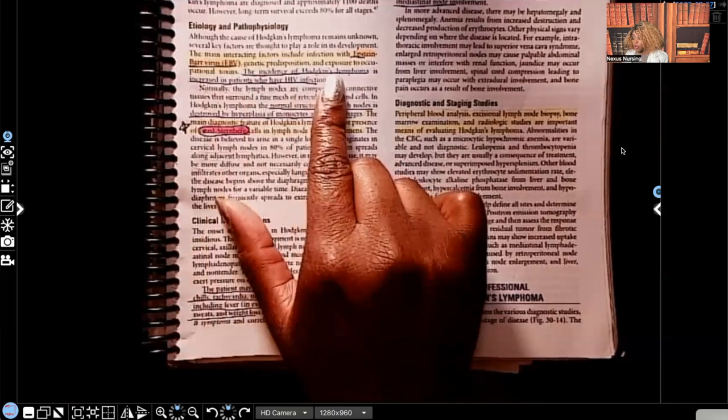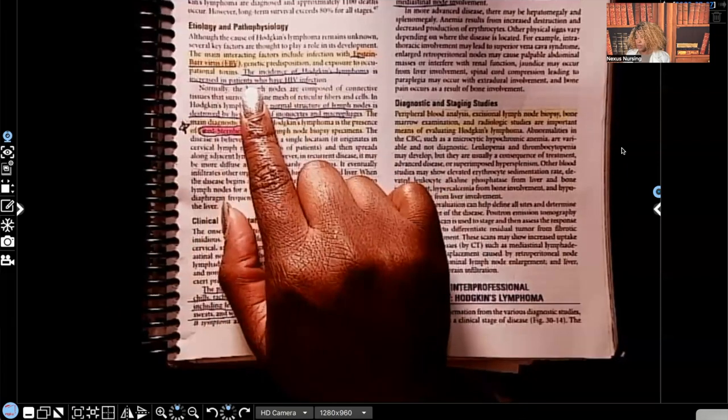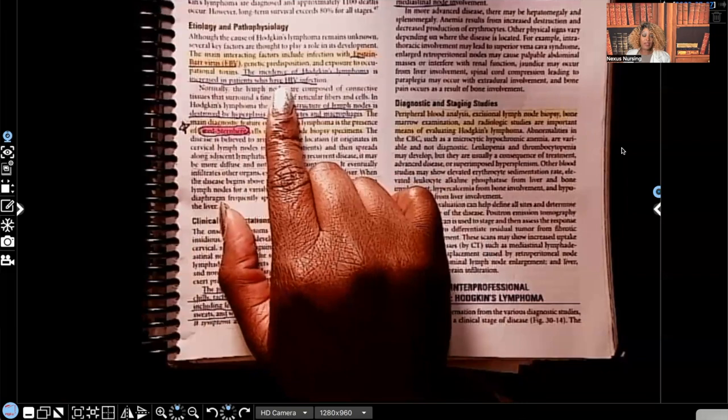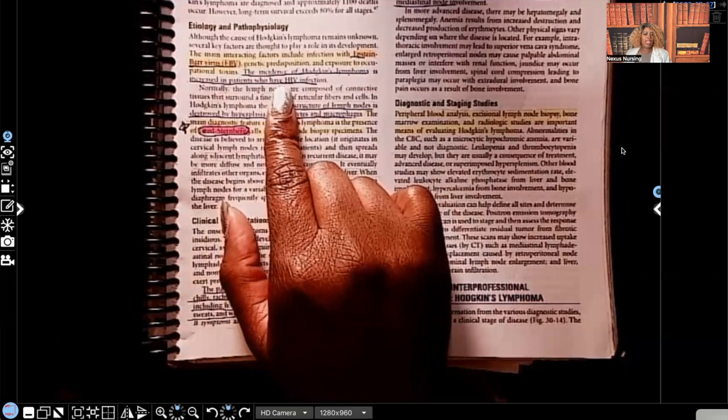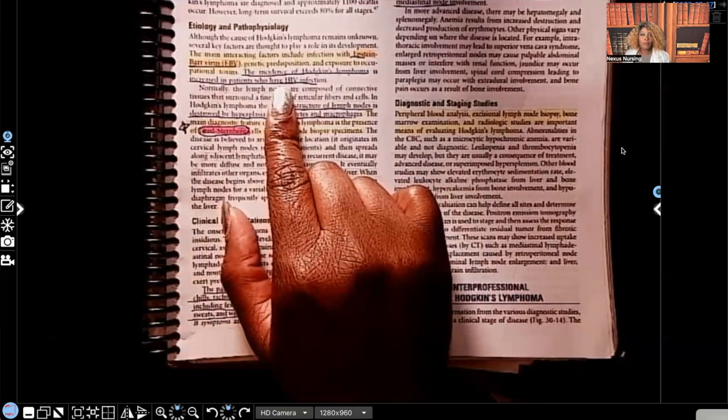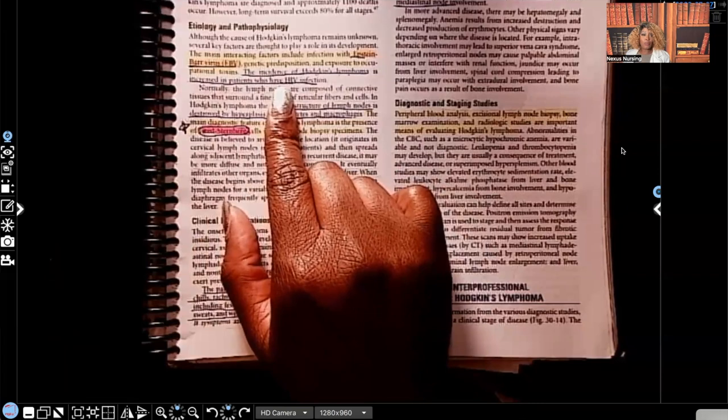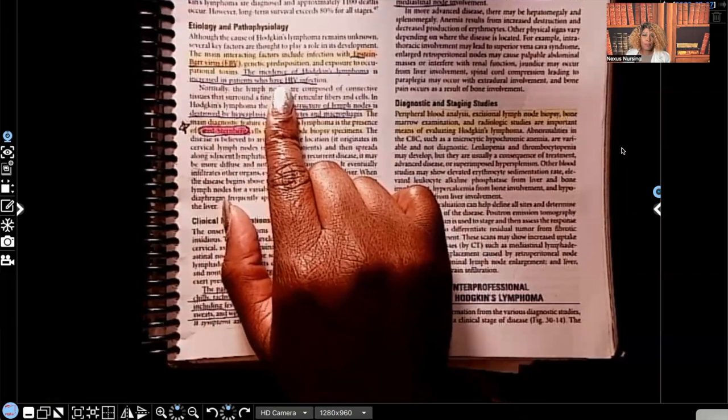The incidence of Hodgkin's lymphoma is increased in patients who have HIV infection. So those patients who have HIV infection, those patients who have AIDS that are severely immunocompromised, they're in a position for opportunistic infections, opportunistic diseases, and Hodgkin's lymphoma is one of them.